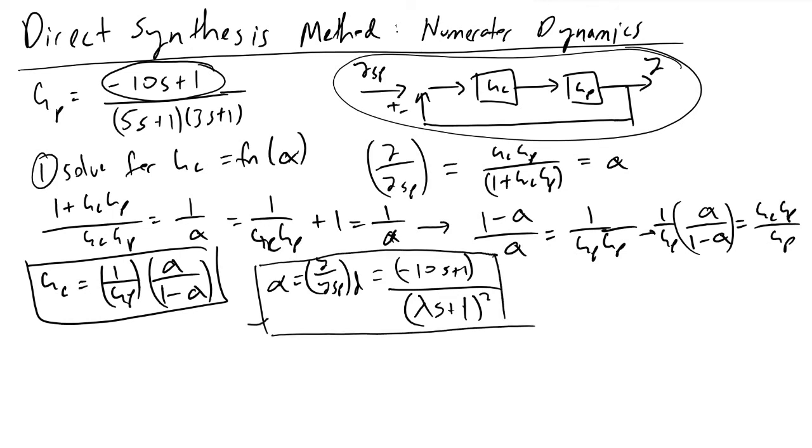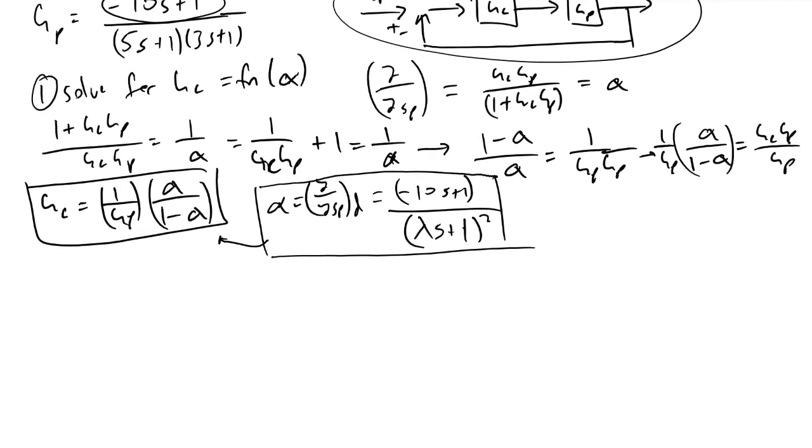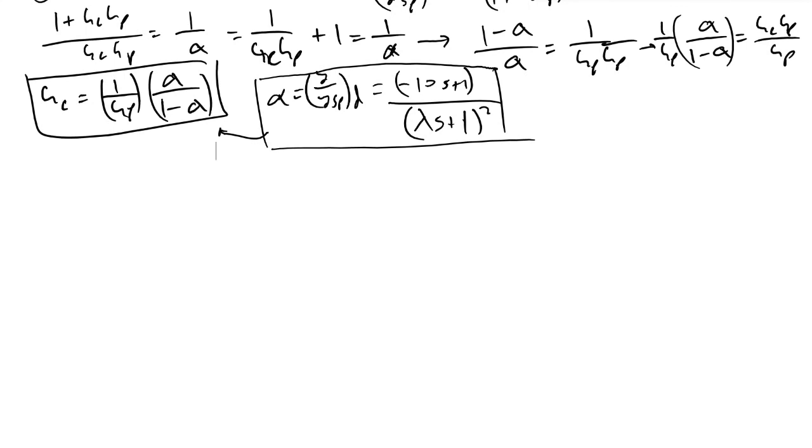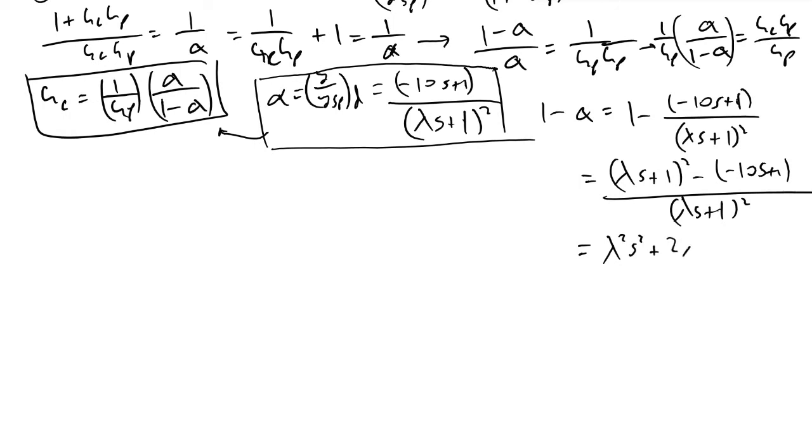Doing that and plugging in these values, we can move on to the next step. Before I do that, I'd like to evaluate these terms. So 1 minus alpha is equal to 1 minus (minus 10s plus 1) divided by (lambda*s plus 1) squared. This is equal to (lambda*s plus 1) squared minus (minus 10s plus 1) divided by (lambda*s plus 1) squared.